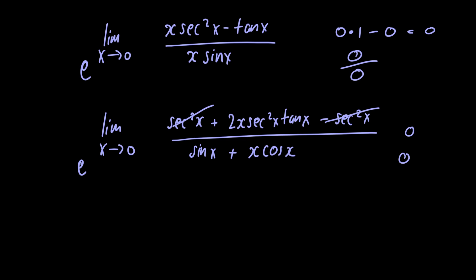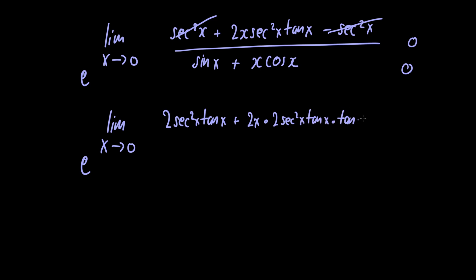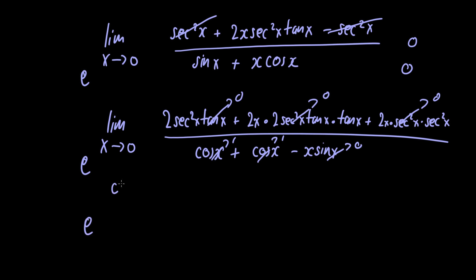So we're going to have to apply L'Hôpital's rule for a third time. We have e raised to the limit as x approaches 0. To take the derivative of the numerator we use the triple product rule, giving us 2 times secant squared of x times tangent of x, plus 2x times 2 secant squared of x times tangent of x times tangent of x, plus 2x times secant squared of x times secant squared of x. Letting x tend to 0, all three terms in the numerator go to 0, while in the denominator we get 0 plus 1 plus 1 equals 2. So we have e raised to 0 divided by 2, which equals e raised to 0, which equals 1. That is the final answer.